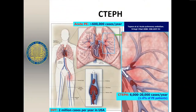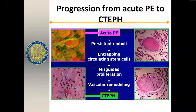There are enough cases out there that this procedure should be more widely applied. There's a progression from acute PE to chronic thromboembolic hypertension. Emboli that become persistent can entrap circulating stem cells, leading to misguided proliferation of cells, vascular remodeling, and chronic obstruction, resulting in the ravages of pulmonary hypertension.